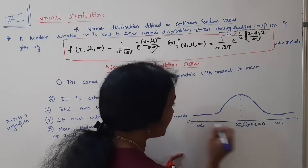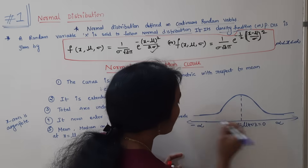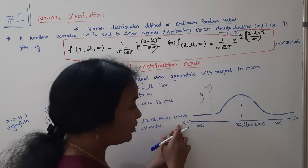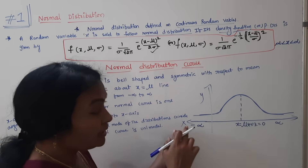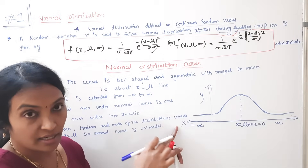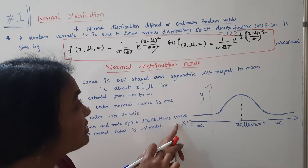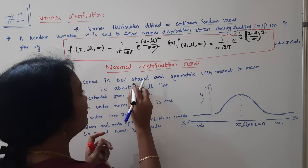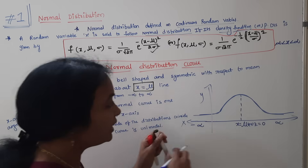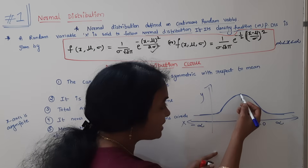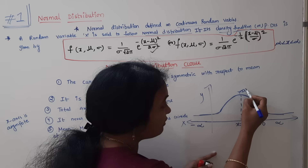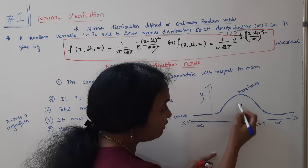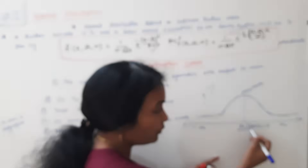This is the x-axis and this is the y-axis. The bell curve is symmetric with respect to the mean, that is, x is equal to mu. The maximum value of the curve occurs at x equal to mu.